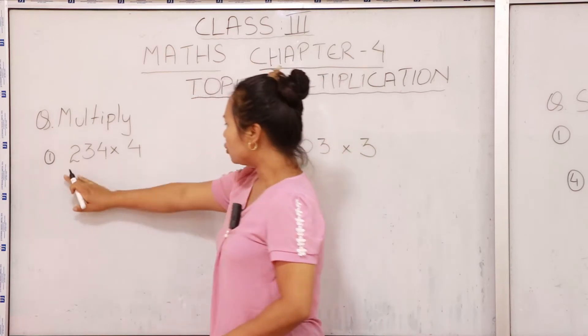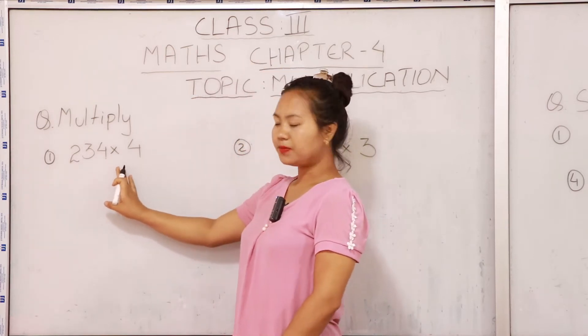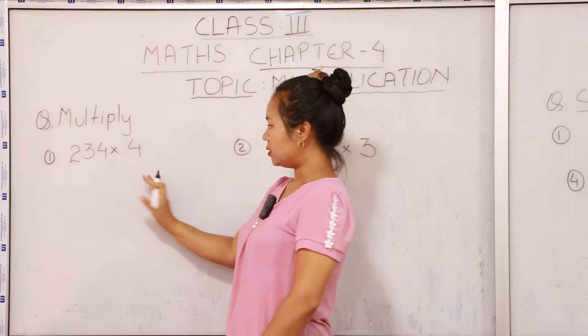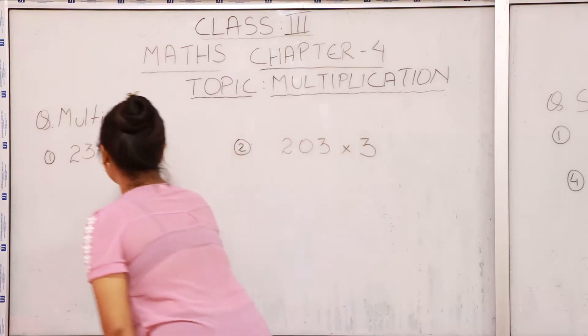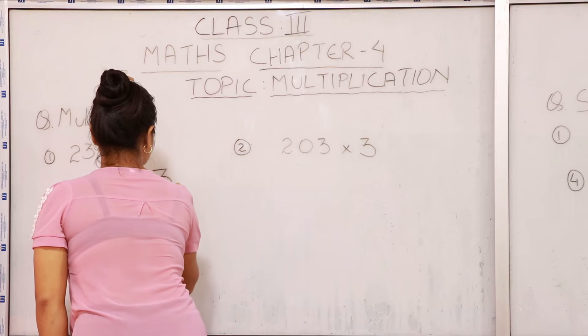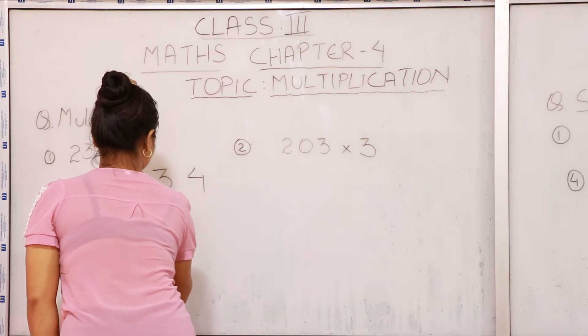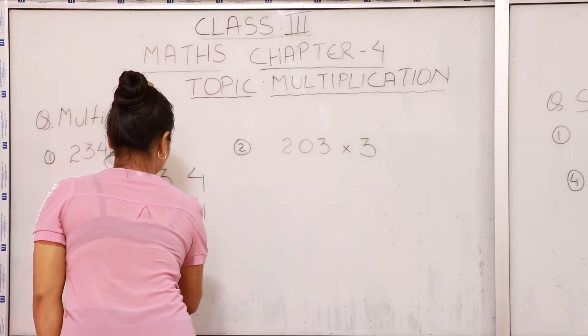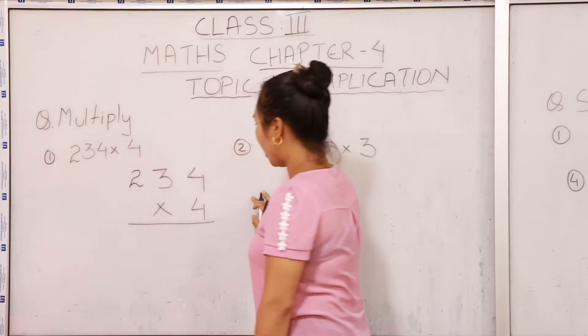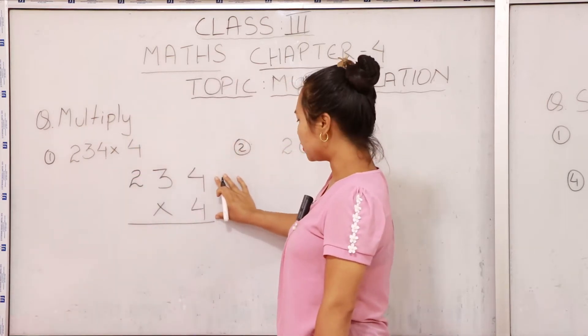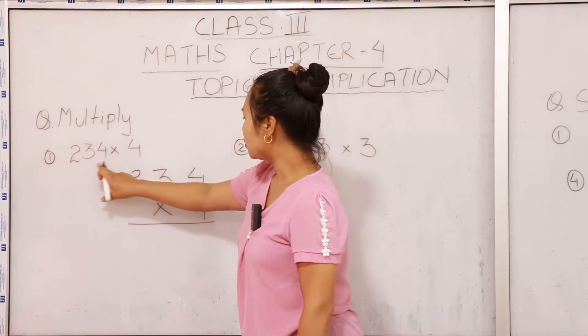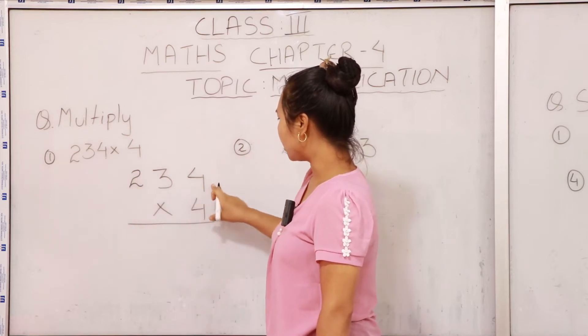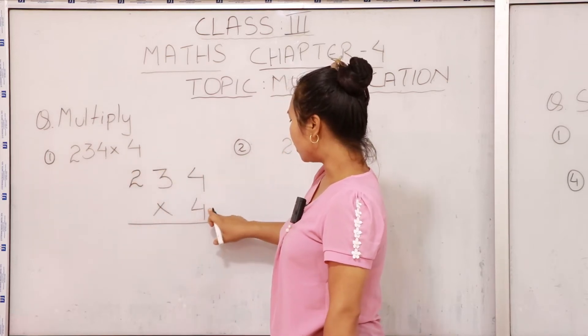That is 234 multiplied by 4. So we have to arrange it, 234 into 4. We have to arrange it in this way. That is 234, 234 multiplied into 4.